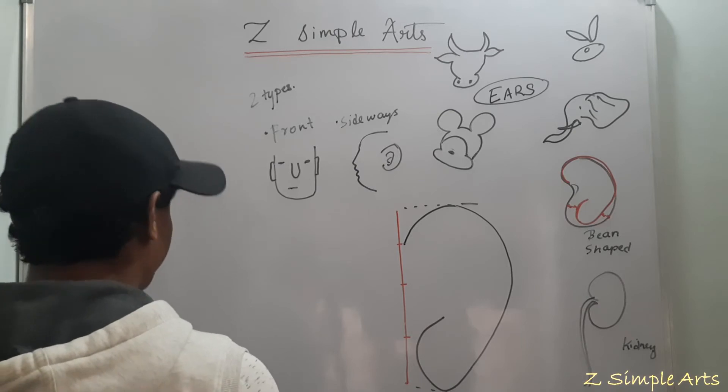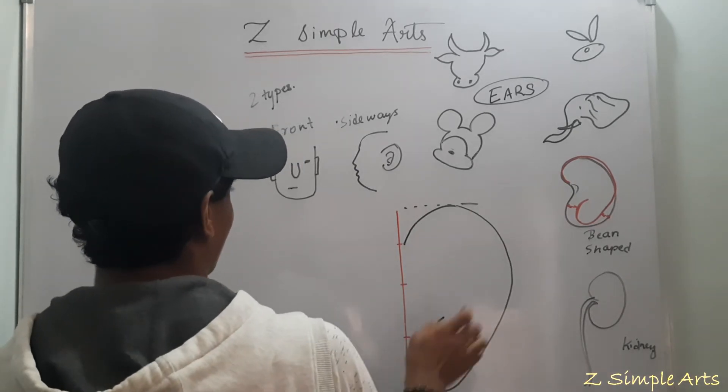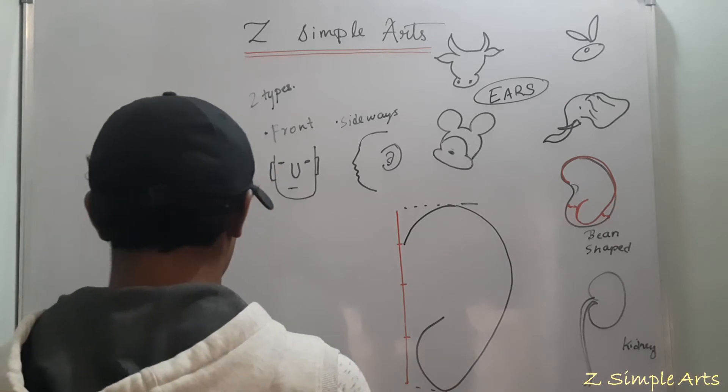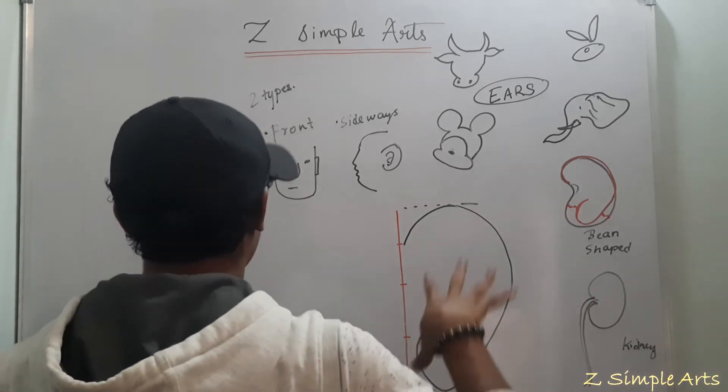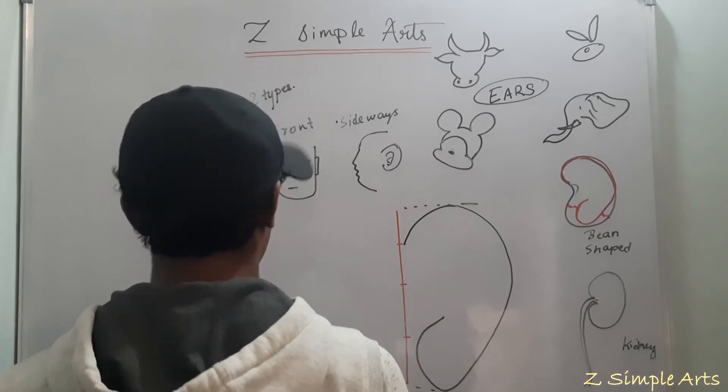Once you are there, the next step is the details of pinna, the ear pinna. It's most complex structure to draw because it has lot of curves. There is a role of shadows and lights that play a lot here.